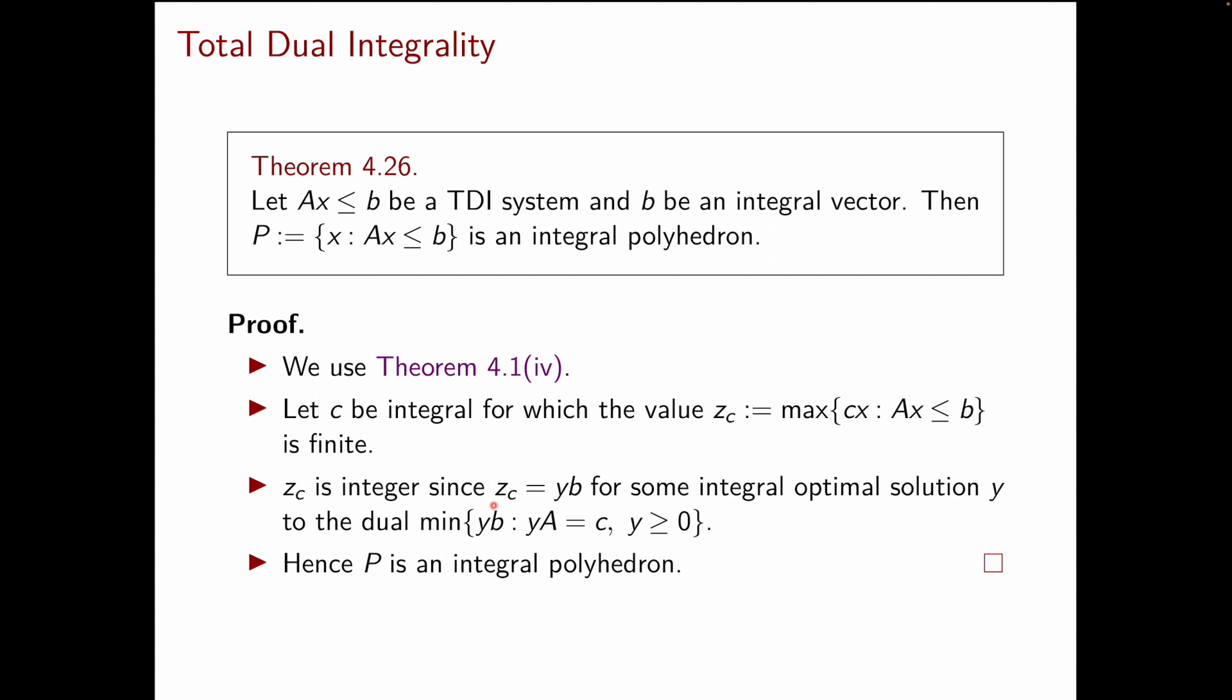Now, from duality, we know that the optimal value of the primal, which is our z_c, is equal to the optimal value of the dual, which is our yb that we just understood is integer. So, z_c is integer as well and from theorem 4.1 part 4, we conclude that P is an integral polyhedron.